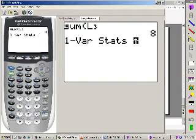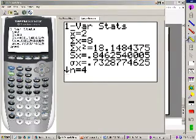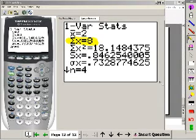Or I could just show you another way to do it. Calculate one variable stat of list 3, and again, you can see it even tells you here it's 8. Either one works fine. But what's more important is that you know what you're doing.